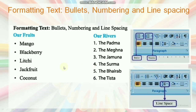Here are two lists shown. Our fruits: mango, blackberry, lychee, jackfruit, and coconut — these are the bullet list. And our river list: the Padma, the Meghna, the Jamuna, the Shurma, the Vairab, the Tishtha — this is a number list. And another is line spacing. Line spacing is used to determine the space between two lines.